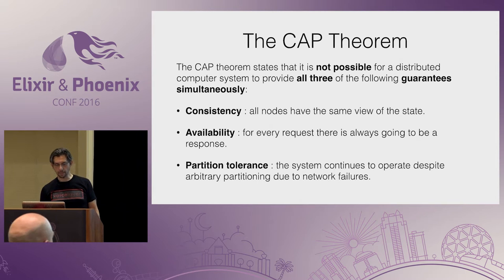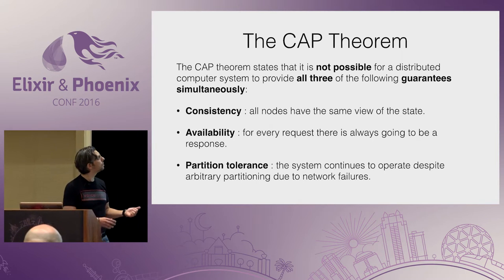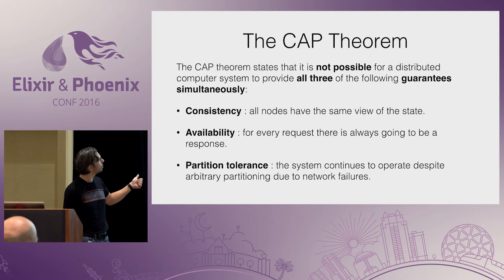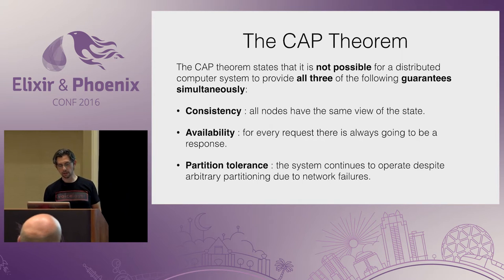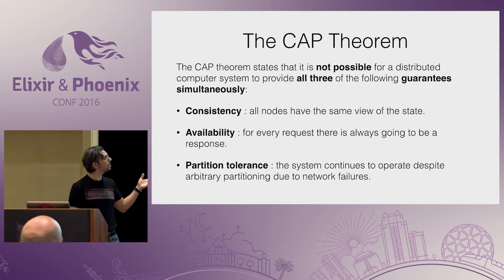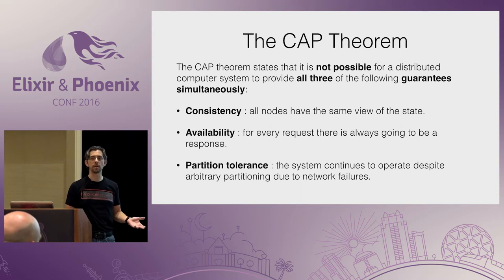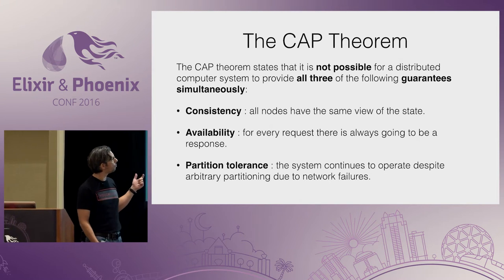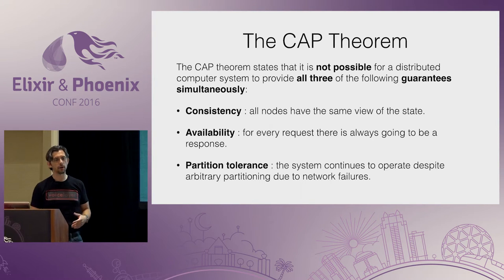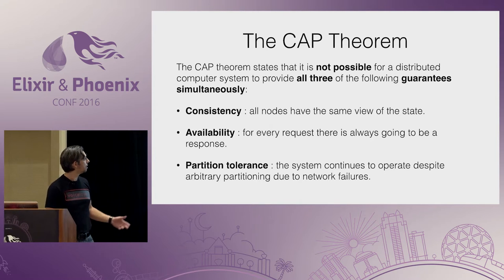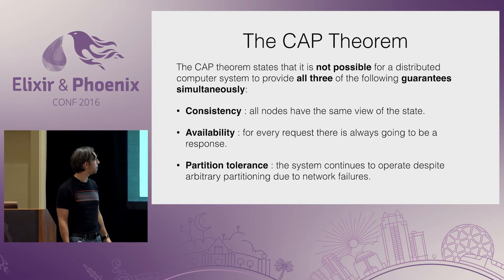Let's go over the CAP theorem. The CAP theorem deals with three concepts: consistency, availability, and partition tolerance. It pretty much states that you cannot meet these three guarantees simultaneously. Consistency means all nodes need to have the same view of the state at the same time. Availability means for every request there's always going to be a response — that response cannot be 'we're not available now, try later.' Partition tolerance means the system will continue to operate despite partitioning and network failures.